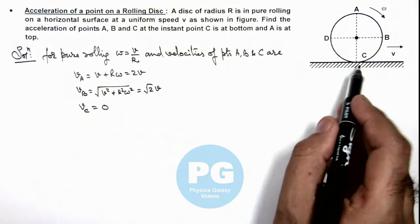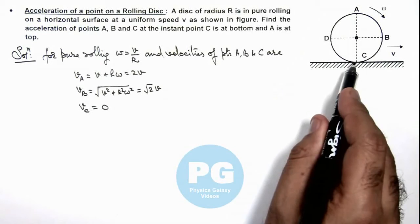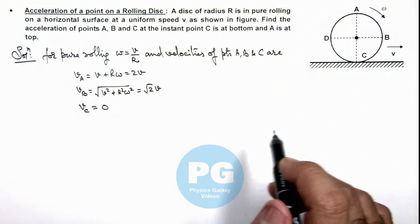Because C is at rest, and in case of pure rolling this is the point where instantaneous axis of rotation exists and it is considered at instantaneous rest.